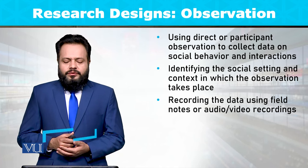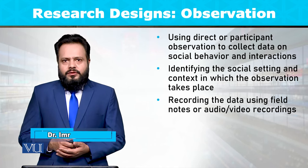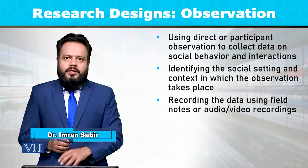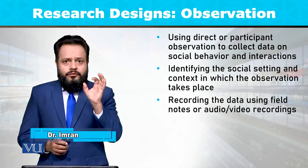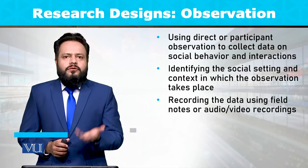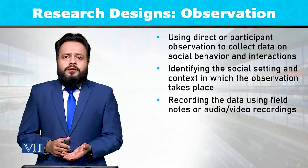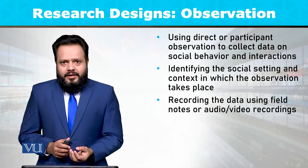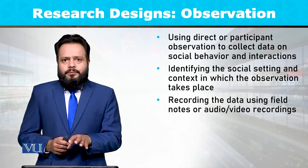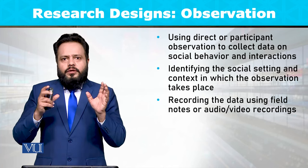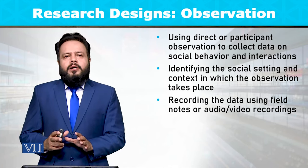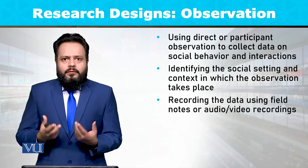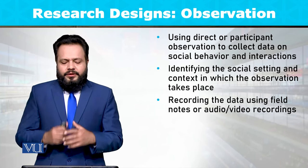And identifying the social setting and context in which the observation takes place. तो इसका अगला step यह है कि पहले कौन सा ऐसा behavior है जिसको हम natural setting के अंदर observe कर सकते हैं, उसको identify करने के बाद next step यह है कि वो natural setting जहां पे उस रवाईय को observe करना मुमकिन हो, उसको identify करें.